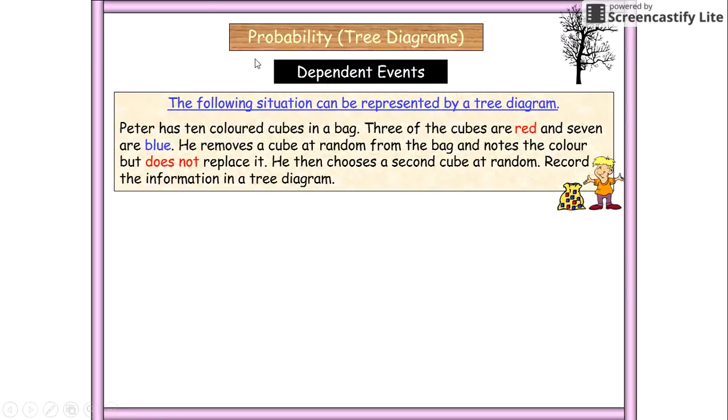So here we've got Peter has 10 colored cubes in a bag. Three of the cubes are red and seven are blue. He removes a cube at random from the bag and notes the color but does not replace it. So this is how it changes.